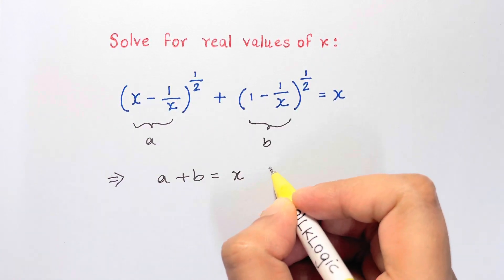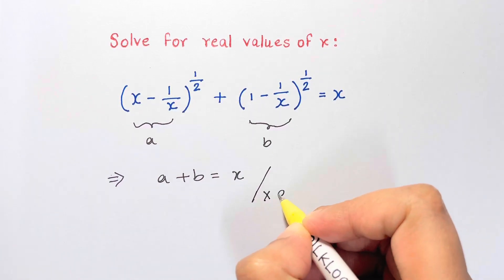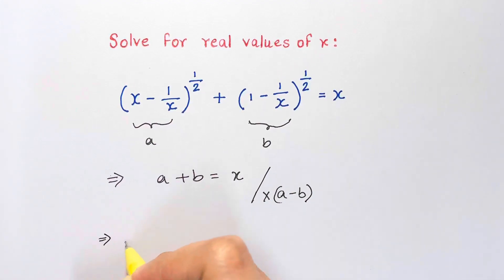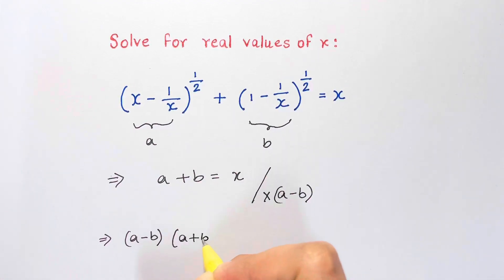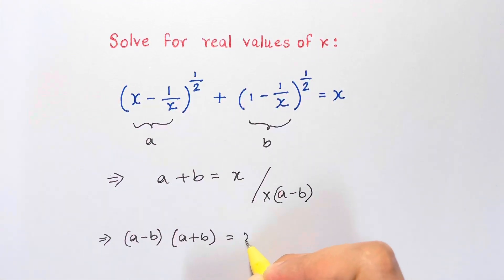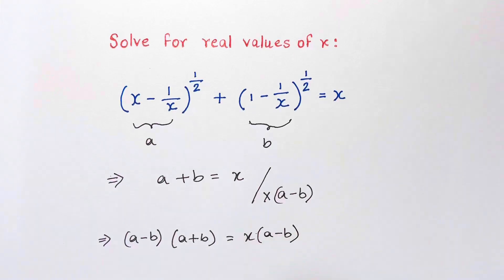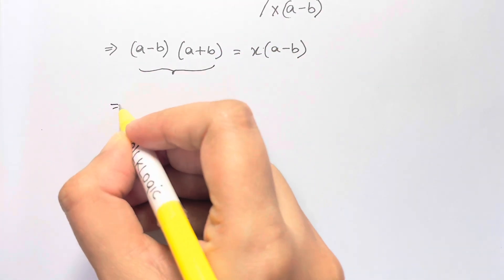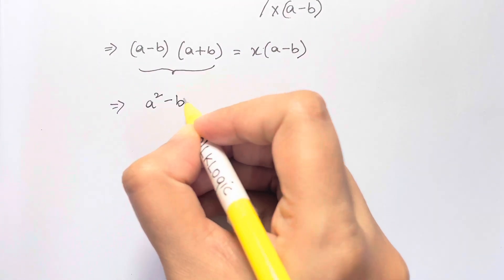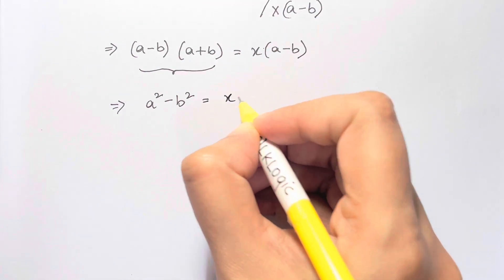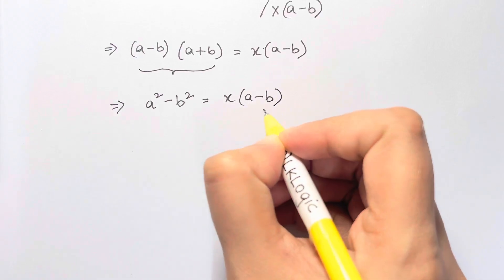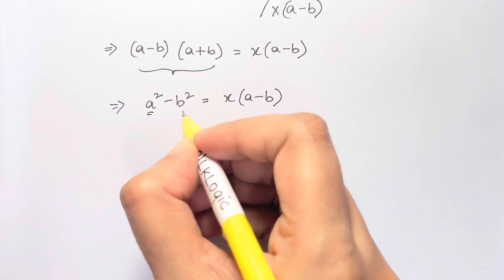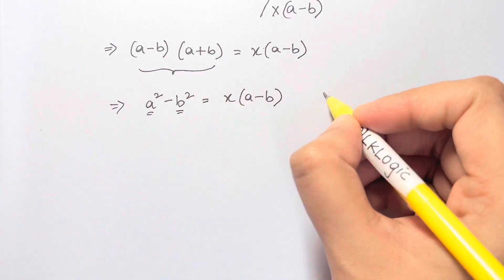Let's multiply both sides by a minus b. We get (a minus b)(a plus b) equals x times (a minus b). If you notice, this is the identity a squared minus b squared, which is equal to x times a minus b. Now we have to find what a squared and b squared are.